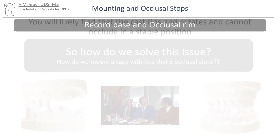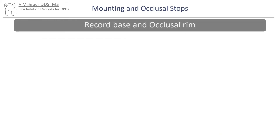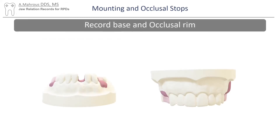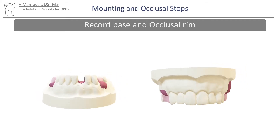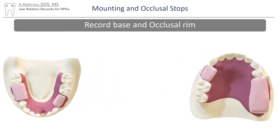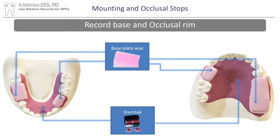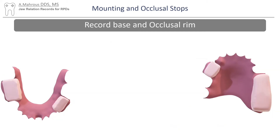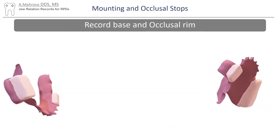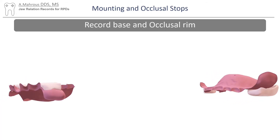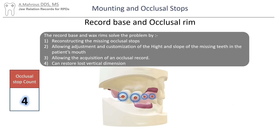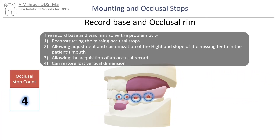So how do we solve that issue? Record bases and occlusal rims are the solution to this problem. The occlusal rim is made out of base plate wax, and the record base is made out of self or light-cured PMMA. They work by restoring the missing occlusal stops, therefore making it possible to mount a case with less than three occlusal stops.